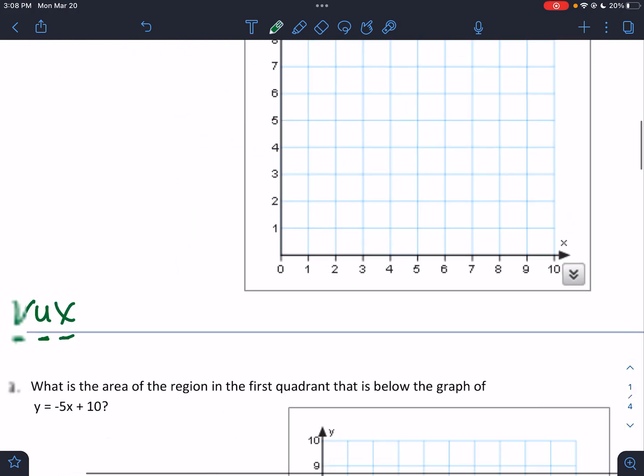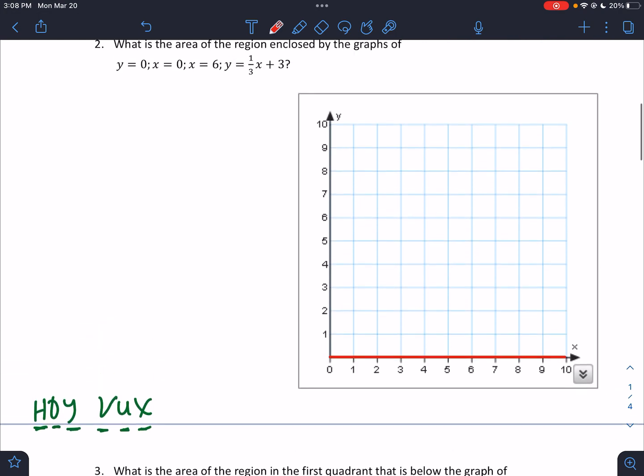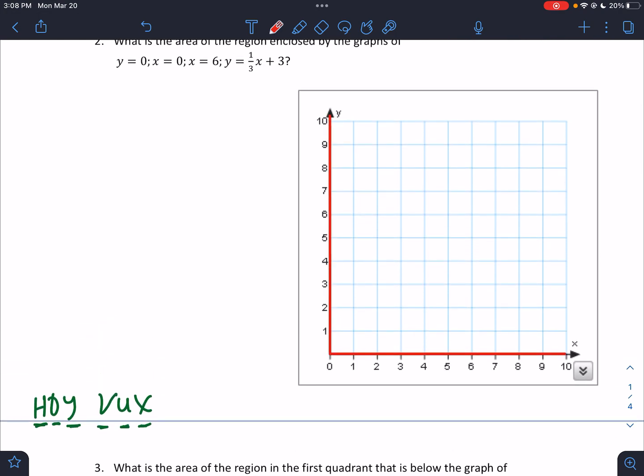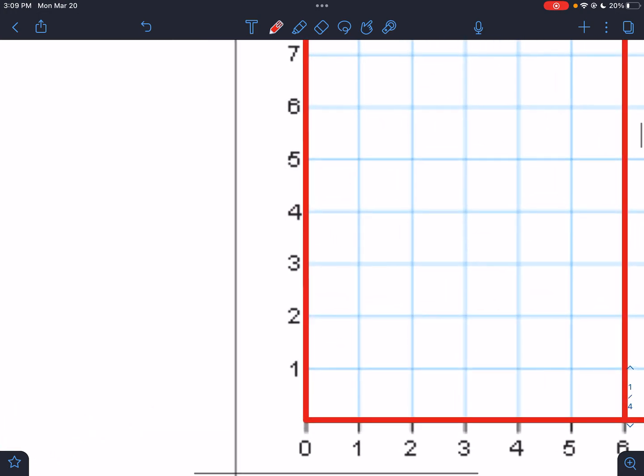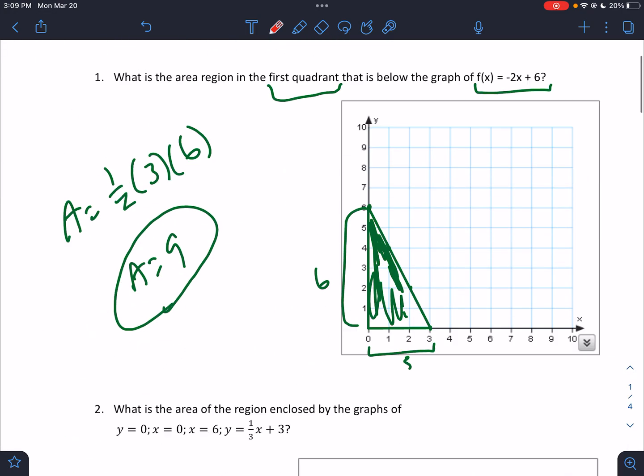So when we say y equals 0, horizontal at 0. So there's a horizontal line at y equals 0. Let's change colors to make it a little easier to see. So a horizontal line at y equals 0. A vertical line at x equals 0. We have a vertical line at x equals 6. And then the line y equals 1 third x plus 3. So we start at 3. We go up 1, right 3. Up 1, right 3. And we're going to have a lot of perfect intersections. I'm not going to make you work too hard on the intersections, although that won't always be the case in future classes.